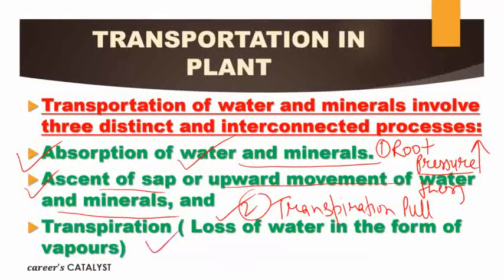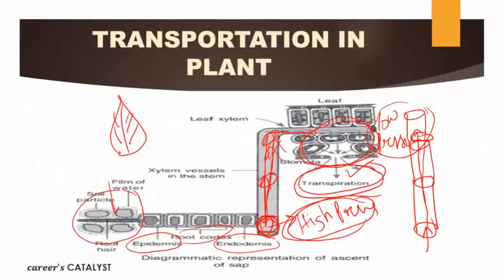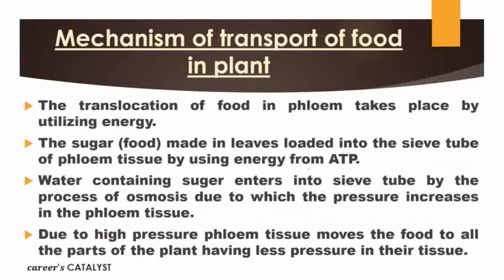Transpiration is the loss of water in the form of vapor. When transpiration occurs, transpirational pull occurs in the plant body.